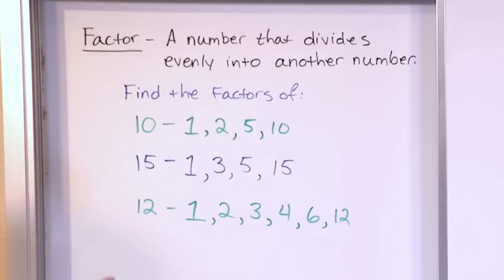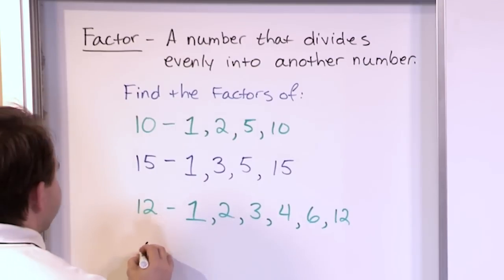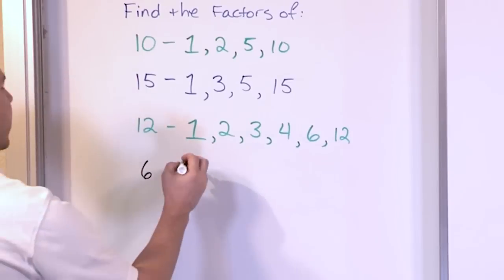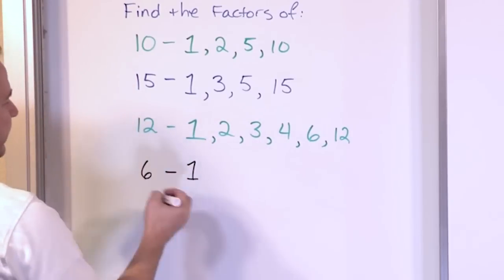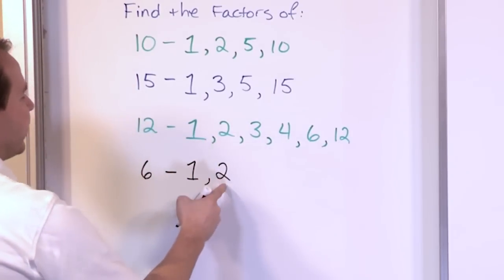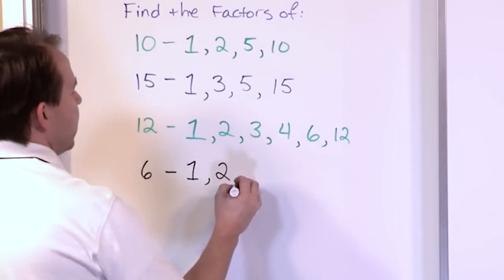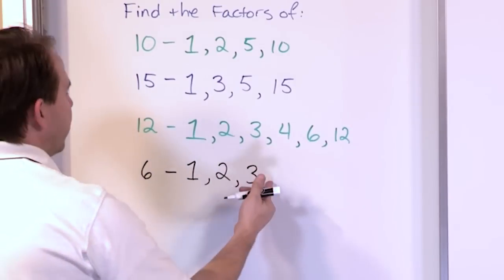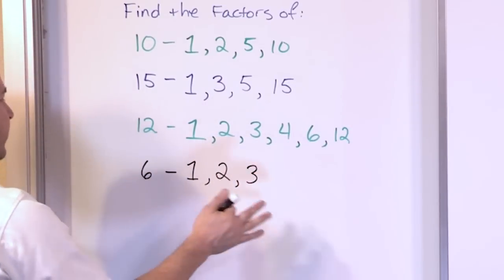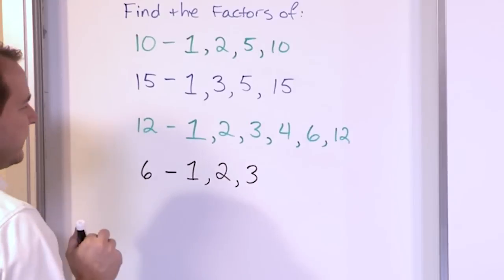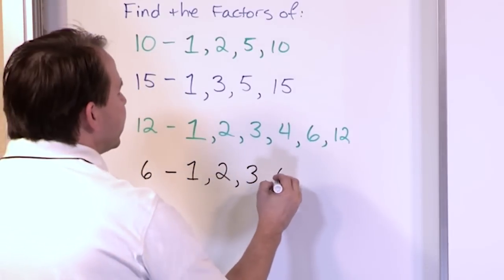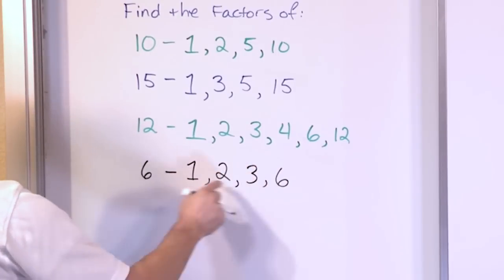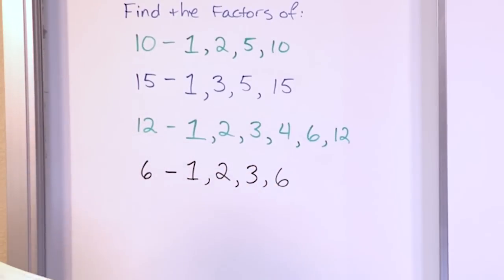What about the number 6? 1 is always a factor. 2 is a factor because 2 times 3 is 6. 3 is also a factor because 3 times 2 is 6. 4 is not a factor, and 5 is not a factor — neither can divide into 6 evenly. But 6 is a factor; the last number is always the number itself because 6 divided by 6 is 1.